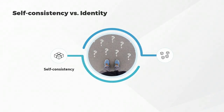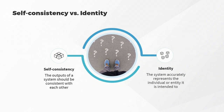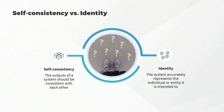Self-consistency refers to the property that the outputs of a system should be consistent with each other. For example, a chatbot designed to provide medical advice should give consistent recommendations for a particular set of symptoms. Identity refers to the property that the system accurately represents the individual or entity it is intended to represent — for example, a chatbot designed to mimic a specific historical figure should accurately reflect that person's beliefs, opinions, and style of speaking.